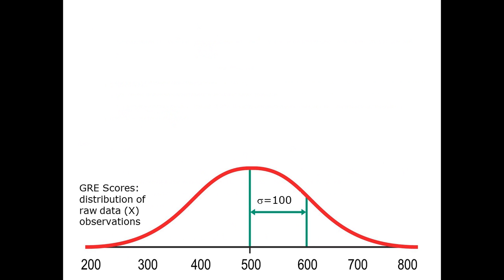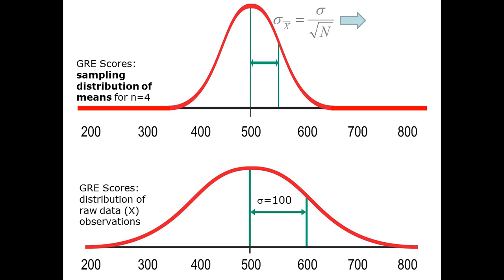All right, so let's start with the GRE scores business. This is a bit of a review. Raw scores GRE have, well they used to, have a mean of 500 and a standard deviation of 100. The sampling distribution of means for n equals 4 has a standard deviation of 50. In other words, a standard error of the mean of 50. And so it's much skinnier. It's noticeably skinnier. The standard deviation is half the size of the standard deviation of the raw distribution, the raw score distribution.